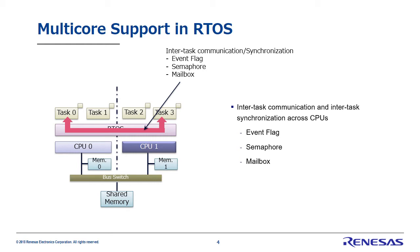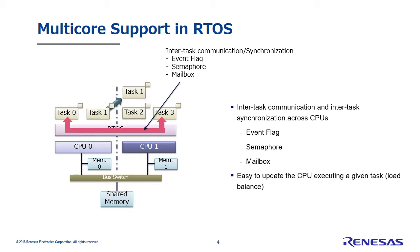This kind of structure means that planning for each task no longer depends on the CPU, because task planning can be done using a single RTOS API. For example, if CPU 0 has a heavy load and CPU 1 has a light load, and we want to transfer task 1 from CPU 0 to CPU 1, there's no need to significantly update the program at all. So another benefit of using multi-core ready RTOS is that it makes load balancing easy.